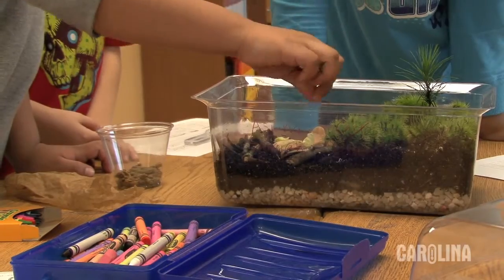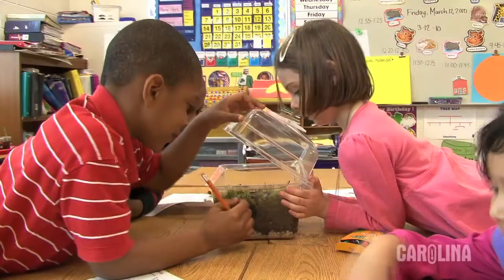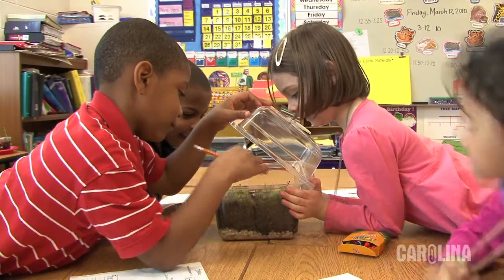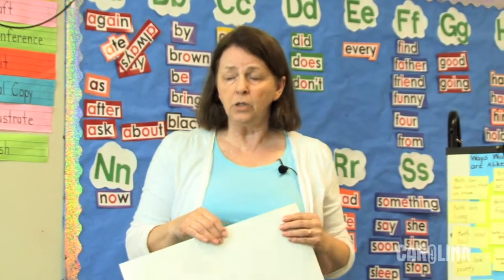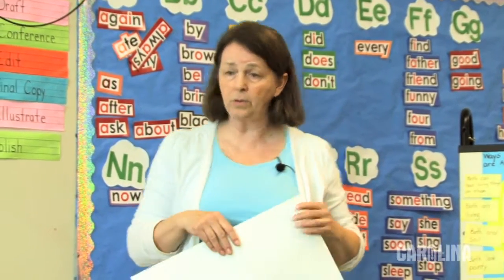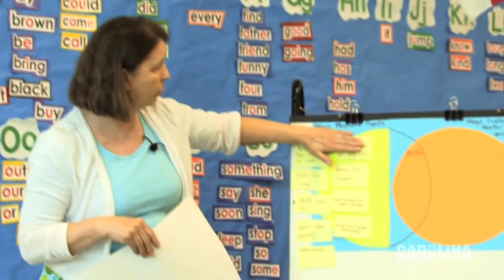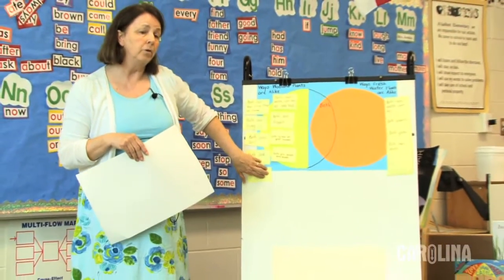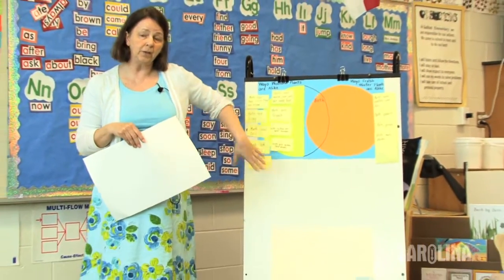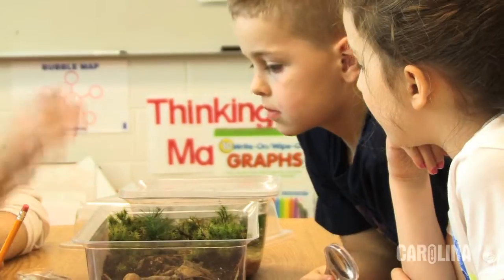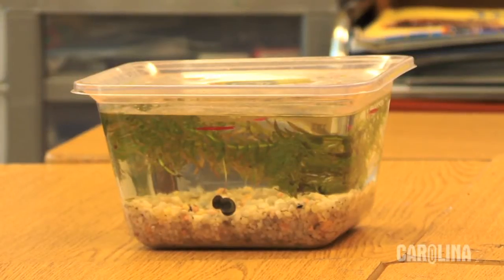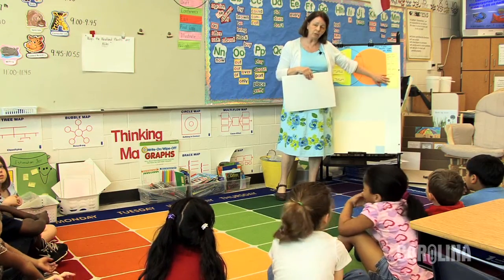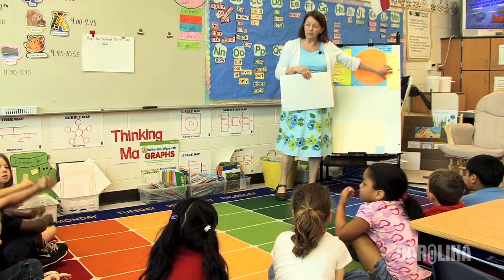What we're going to do today is we're going to take another look at our plants, and you're going to have an opportunity to add anything else to how the woodland plants are alike. You're going to go over and investigate, use your hand lens. You're also going to look, investigate, and observe the fresh water plants and see if there's something else that you can add to this side.